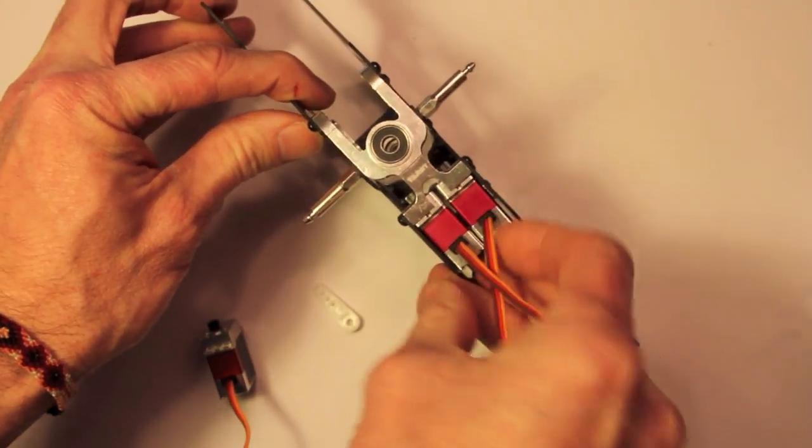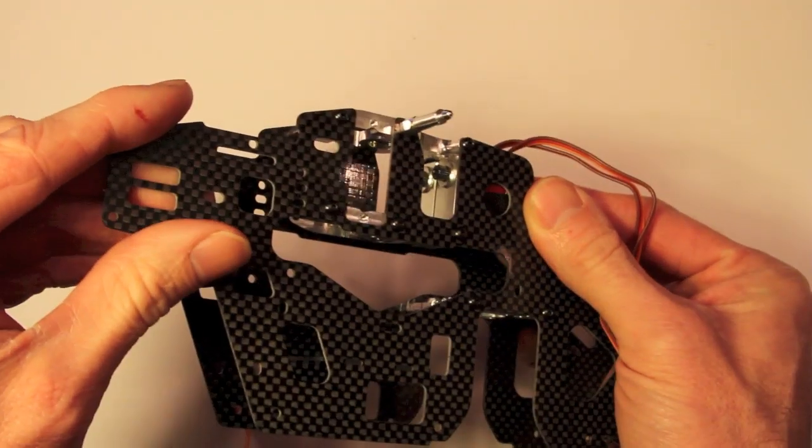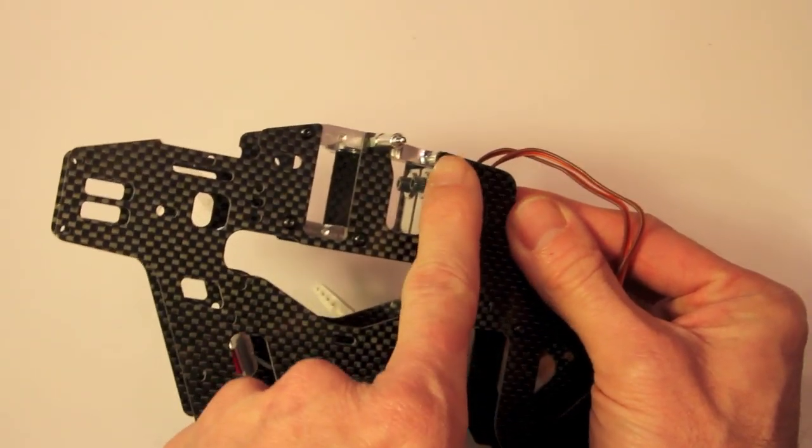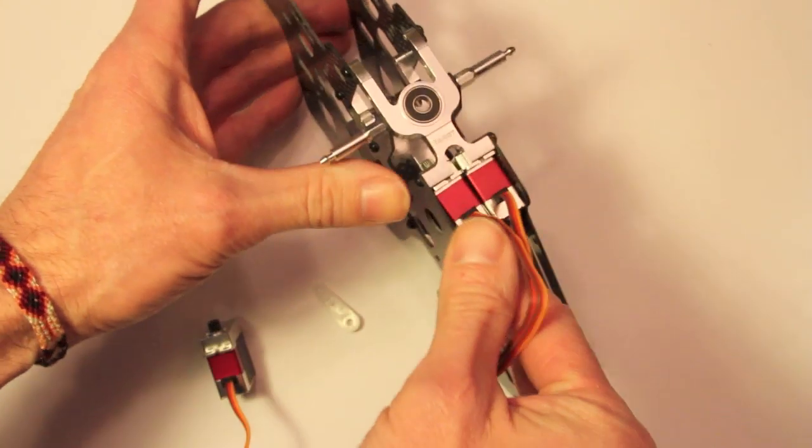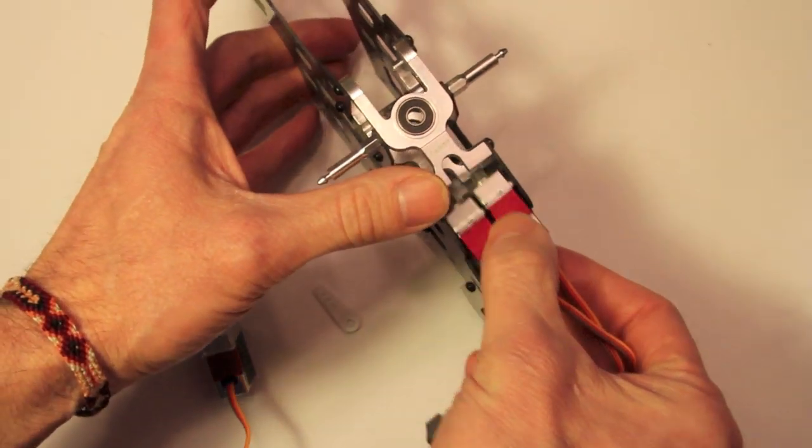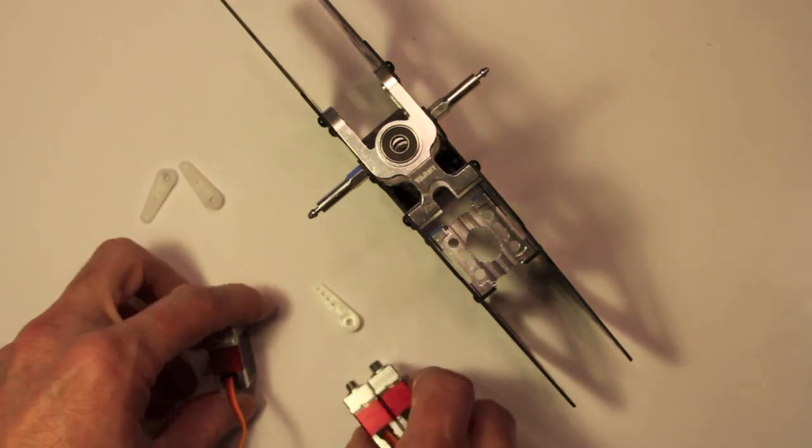They will mount with the servo arms pointing in the upwards direction. I'm not mounting them yet, I'm just going to get them set at 90 degrees because I'm going to install the motor before I mount them.